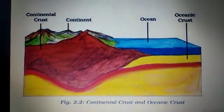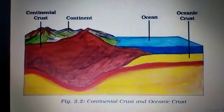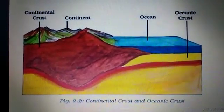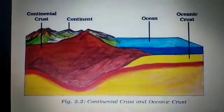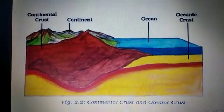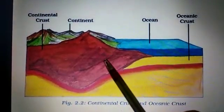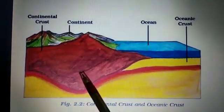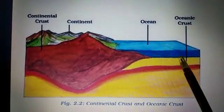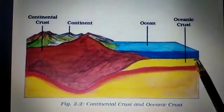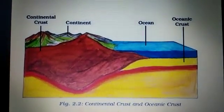The main minerals that make up the continental crust are silica and aluminum. Looking at the picture, the continental crust shown in brown color is made of silica and alumina. The oceanic crust mainly consists of silica and magnesium.